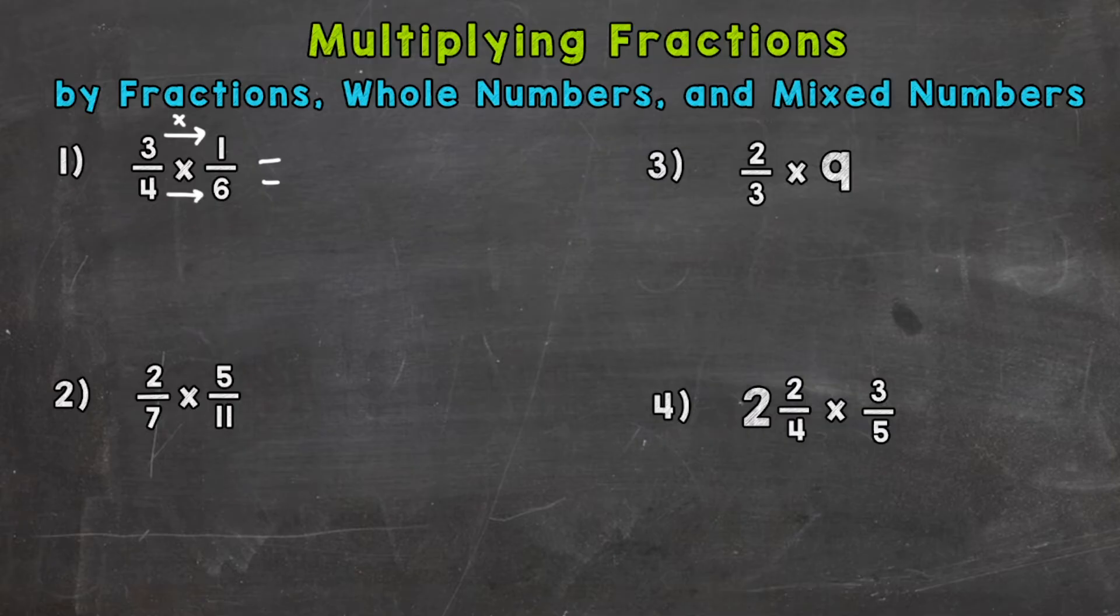So all we need to do here is straight across. Three times one and four times six. So numerator times numerator, denominator times denominator. So three times one is three. Four times six is 24. So that is our answer but always look to see if you can simplify. And in this case we can. Three and 24 they have a common factor of three. So let's divide each of these by three here. And we get three divided by three is one. And 24 divided by three is eight. So our final simplified answer is one eighth.